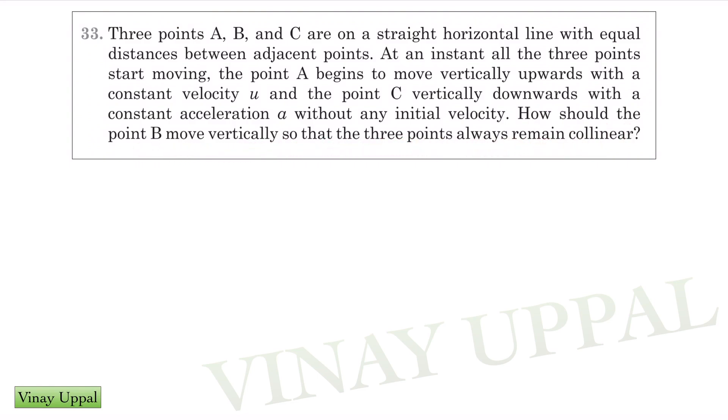If I draw the diagram, they are all equidistant. A is moving vertically upwards with velocity u, so in time t it will be here. C is moving vertically downwards with acceleration a, so in time t these are the positions of A and C. So B must be here.